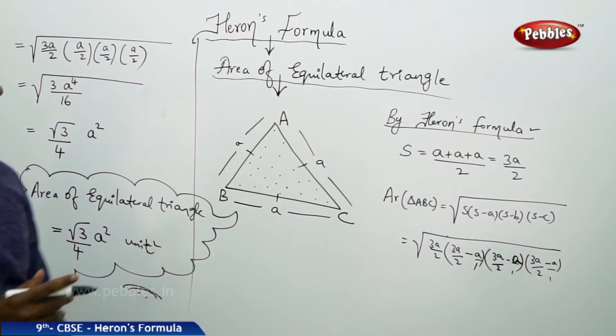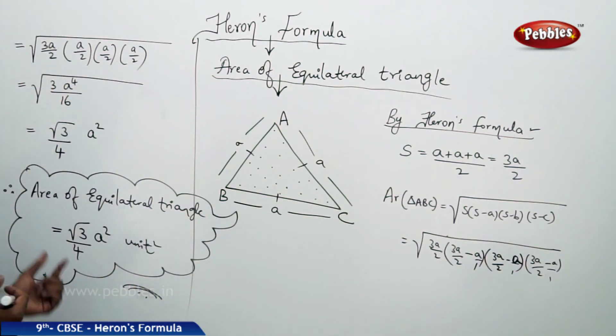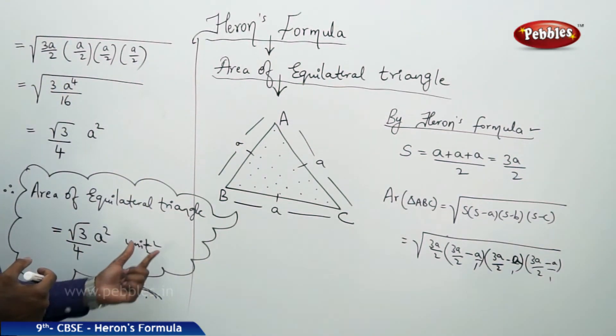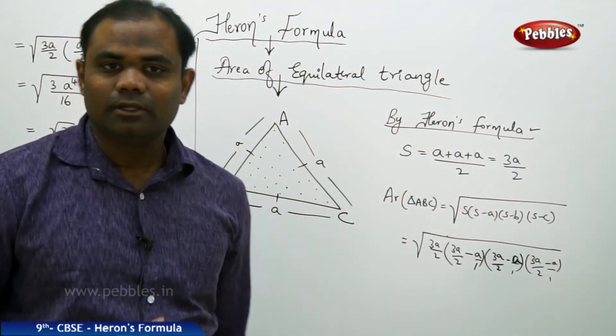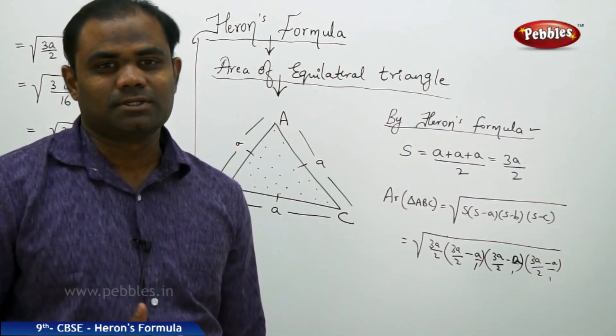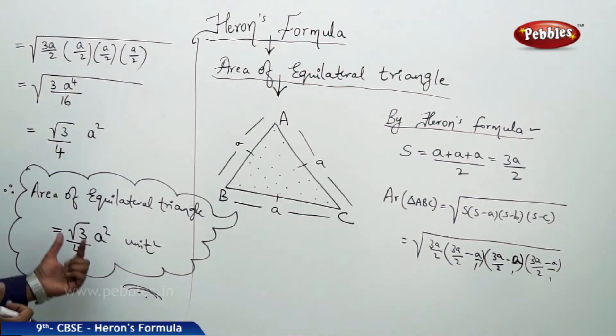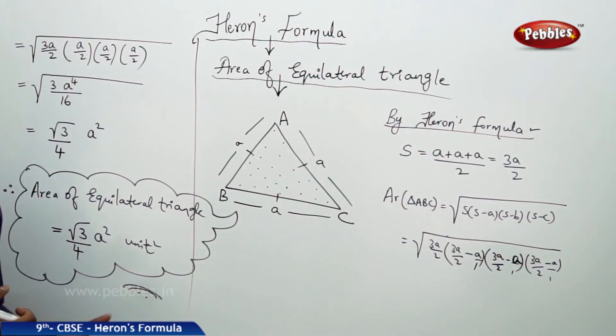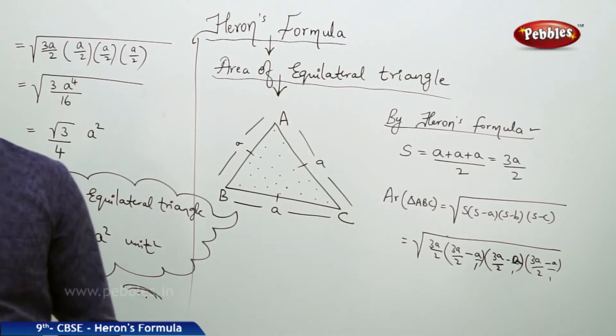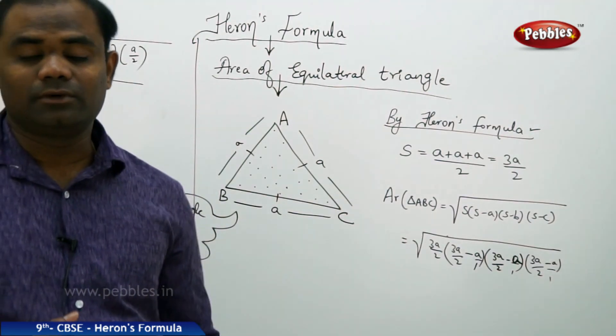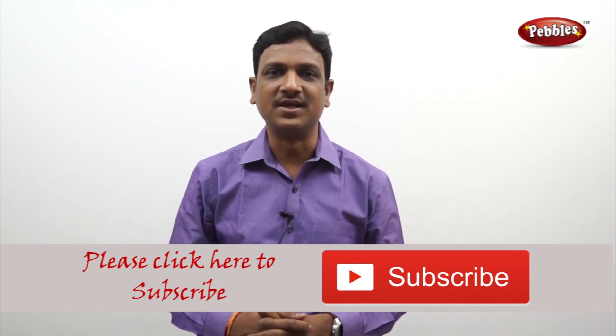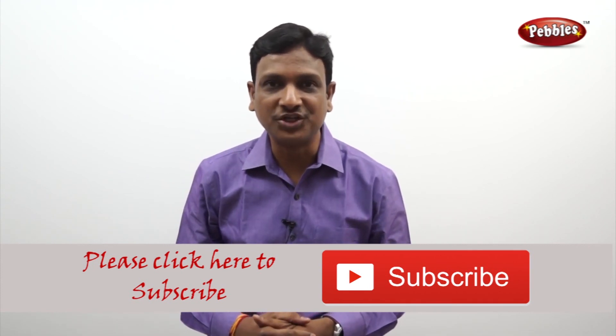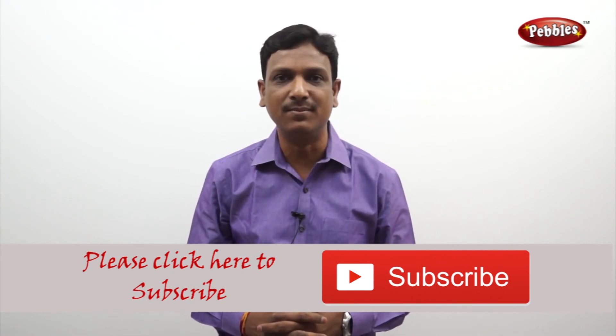Area of equilateral triangle is root 3 by 4 A square unit square. From Heron's formula, equilateral triangle reduces to its area with a special formula root 3 by 4 A square where A is the side of the equilateral triangle. If you like this video, please give a thumbs up. Please subscribe to our channel to get more videos on CBSE syllabus.